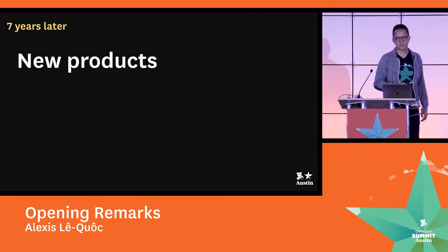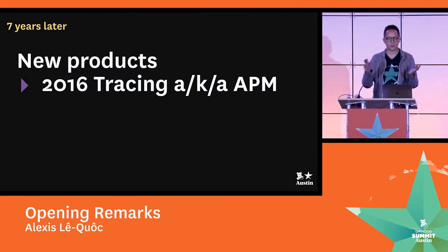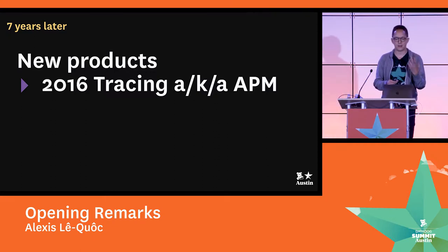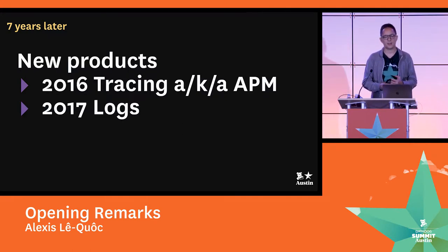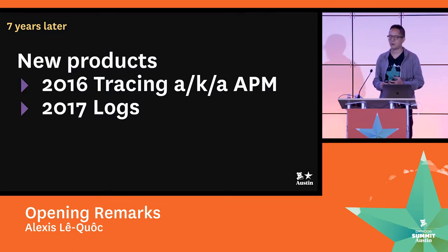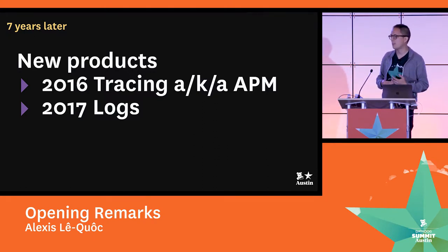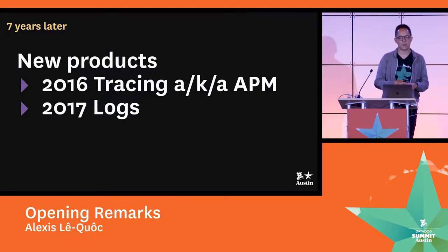Seven years later, we've added a couple of products since we started with the core infrastructure. One of them is APM, or tracing — formally it's Datadog APM. We announced it last year in private and public beta, and then formally launched it this spring. The big announcement of this year is logs — we made an early September announcement of an acquisition we made of a log management company out of Paris called Logmatic. We're happy to have them on board.